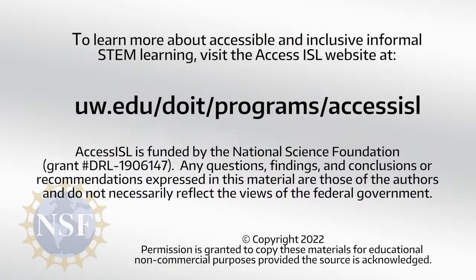To learn more about accessible and inclusive informal STEM learning, visit the Access ISL website at uw.edu/doit/programs/access-isl. Access ISL is funded by the National Science Foundation, grant number DRL 1906147.